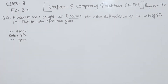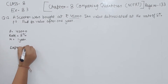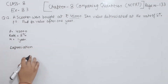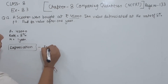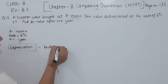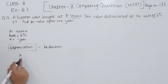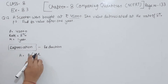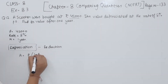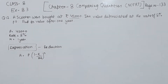Now we are going to find the depreciation. Depreciation is the reduction in value. So we have to find the reduction in value. This time we are going to use the formula A = P(1 - R/100)^n. This is the formula we use when finding depreciation.